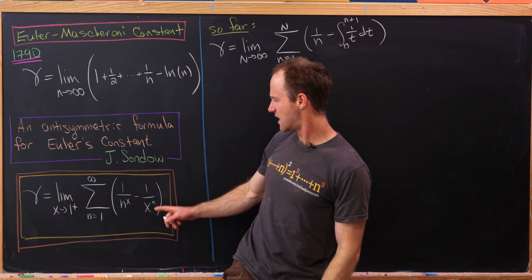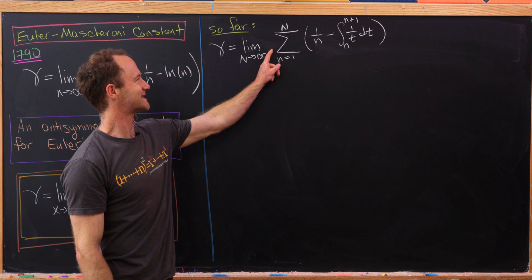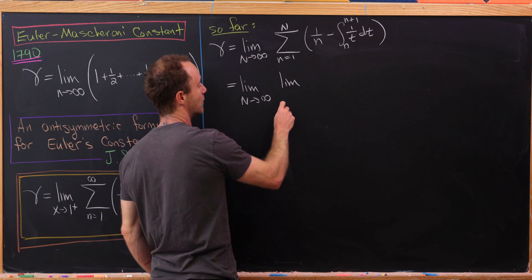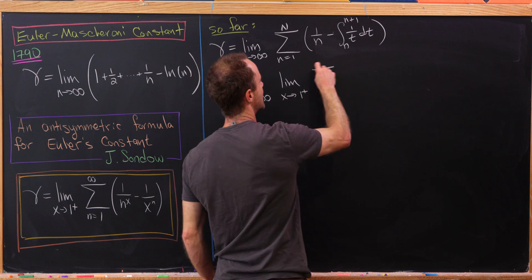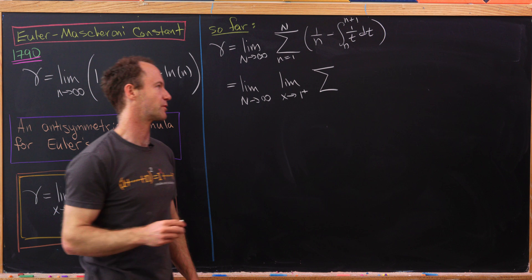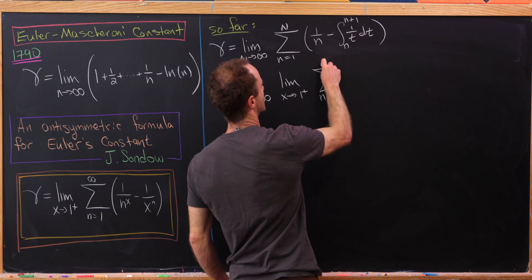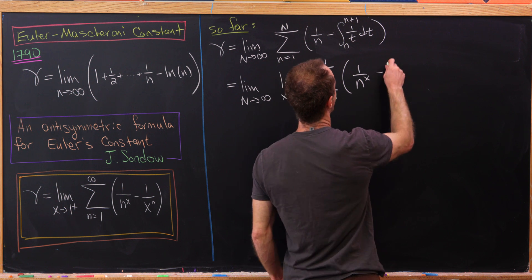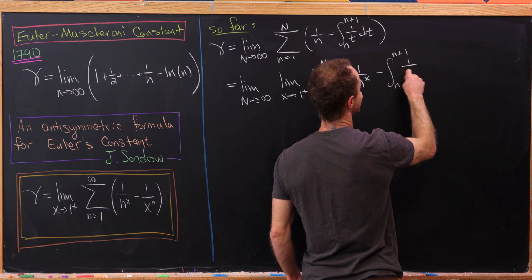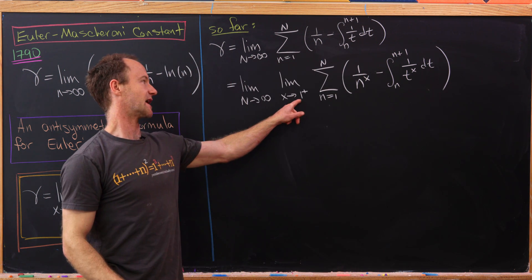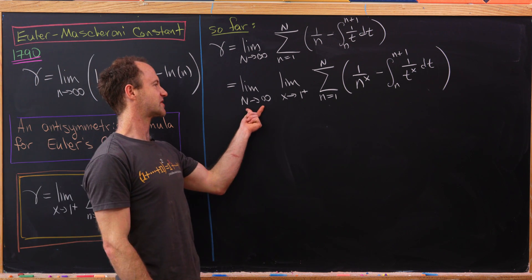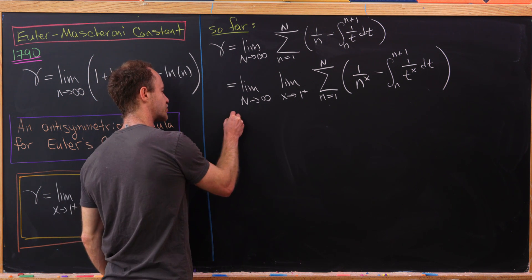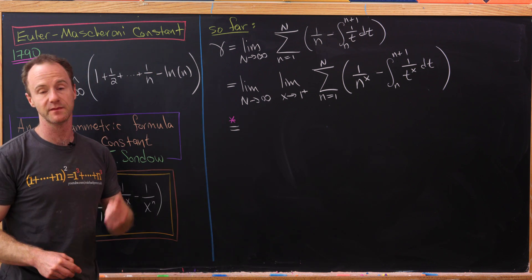So far, there's nothing having to do with the limit as x goes to 1 from above, so I'm going to sneak that in the middle. I'll still have the limit as N goes to infinity, but now inside will be the limit as x goes to 1 from above. We've got the sum as n goes from 1 to N of 1/n^x, and then minus the integral from n to n+1 of 1/t^x dt. We're going to exchange the order of our limits — we'll prove why that's okay using the Weierstrass M-test.